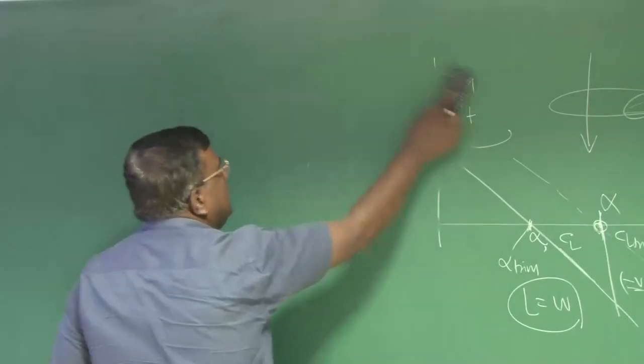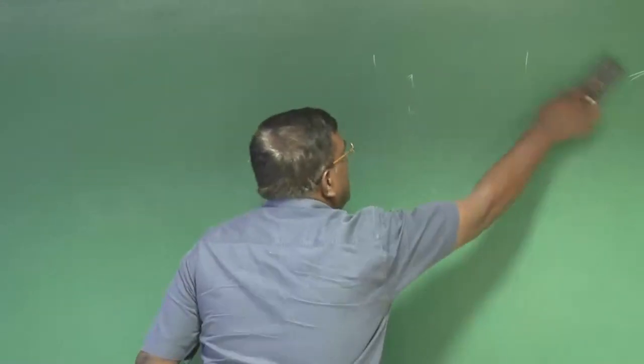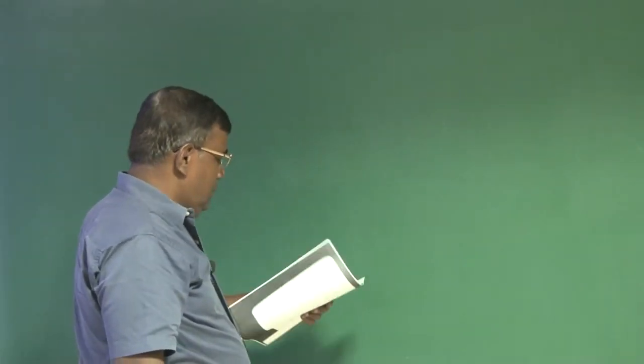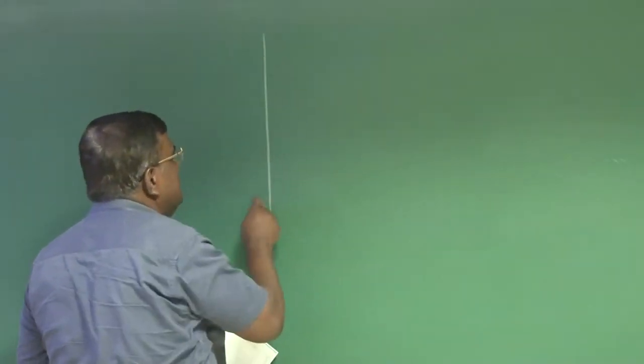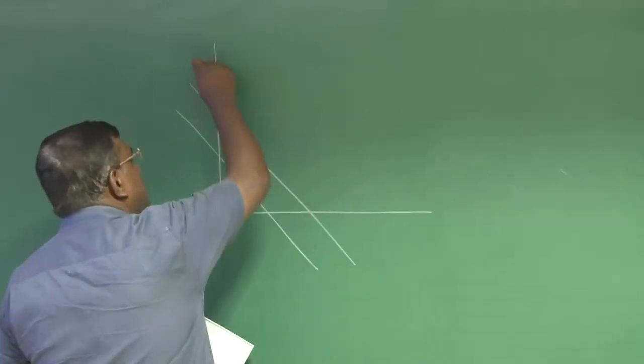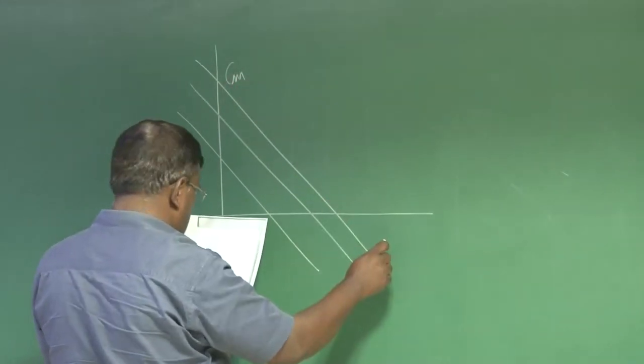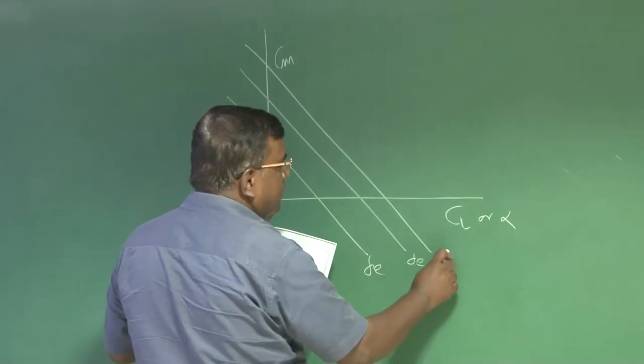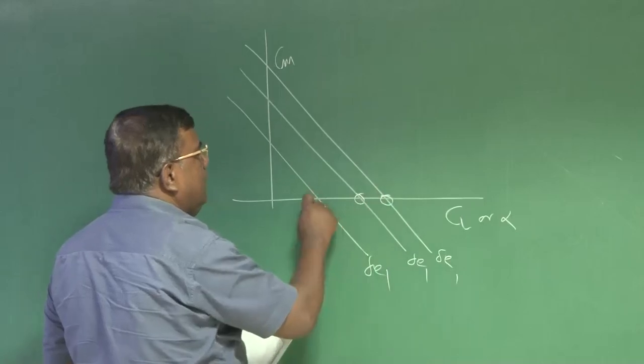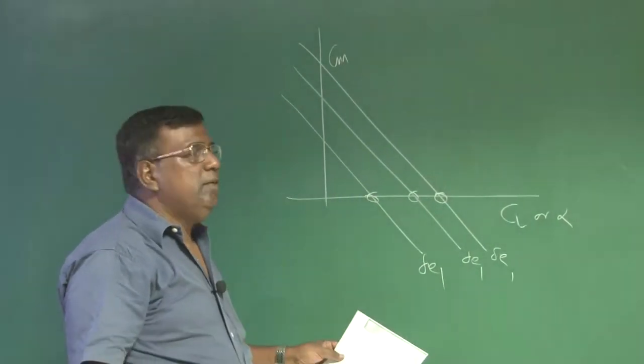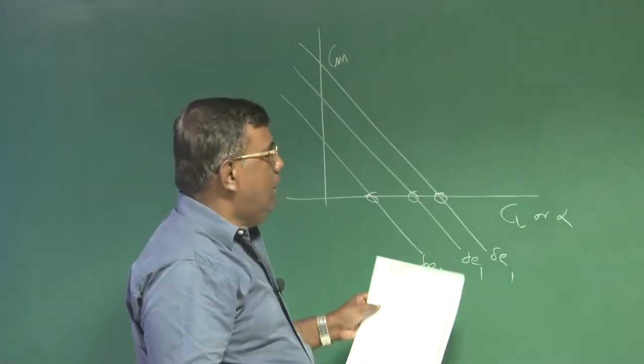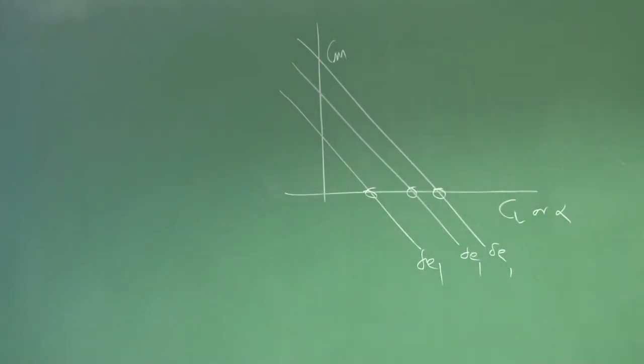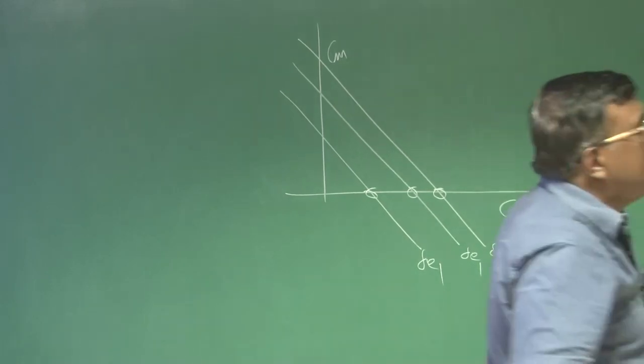Now, the question is what is Cm_delta_E? How does Cm_delta_E get linked with elevator sizing? That is important, although we have taken 40 to 50 percent as initial conceptual stage. To understand this, we will revise one of the problems from earlier courses. Let us summarize: I can trim the airplane at different Cl or alpha for different delta E requirements. Is my elevator powerful enough to generate or to trim the airplane? That is the question.